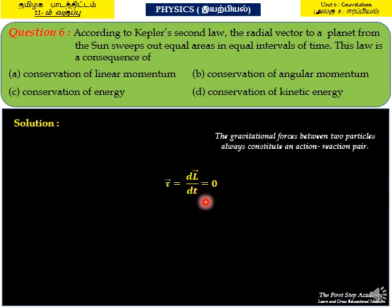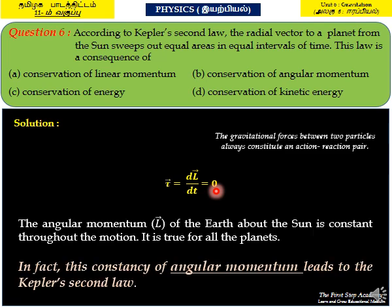When will this value become 0? If the angular momentum L vector is constant, then the value of torque will become 0. The angular momentum of the earth about the sun is constant throughout the motion. It is true for all planets. In fact, this constancy of angular momentum leads to Kepler's second law.